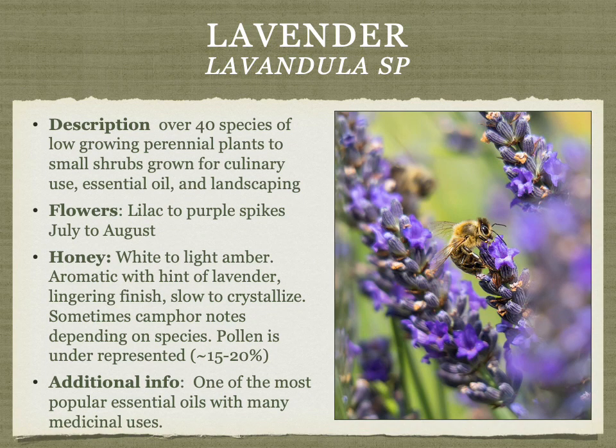Lavender is a wonderful herb used in landscaping, herb gardens, and for essential oil. The honey is white to light amber, aromatic with a hint of lavender flower, a lingering finish, and slow to crystallize. Some species have camphor-like notes. The pollen is underrepresented in the honey.